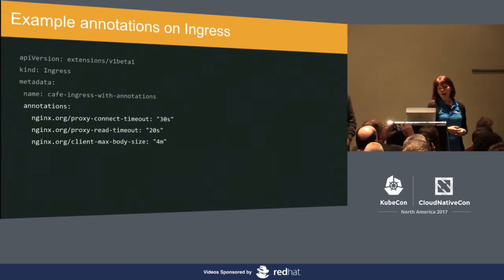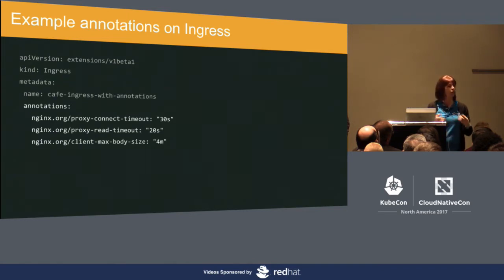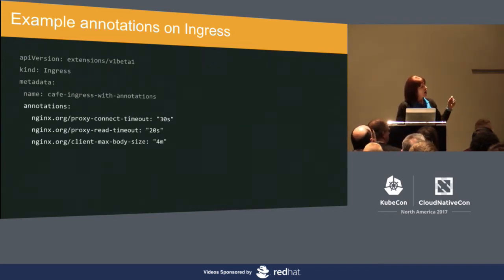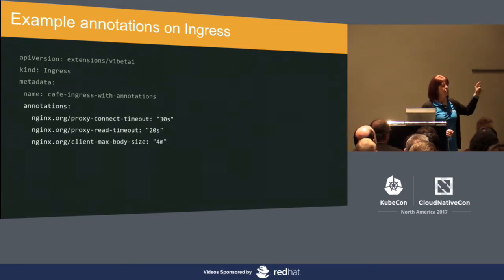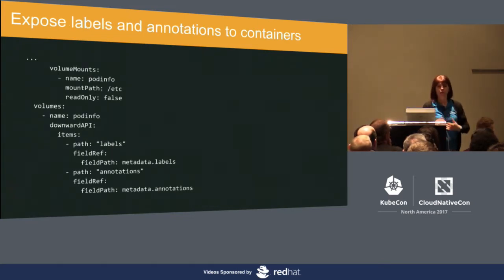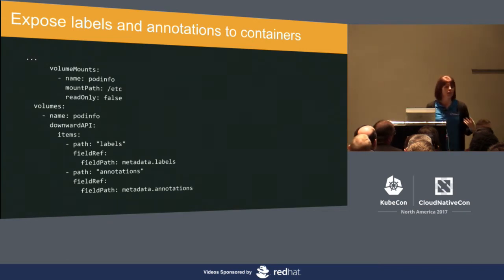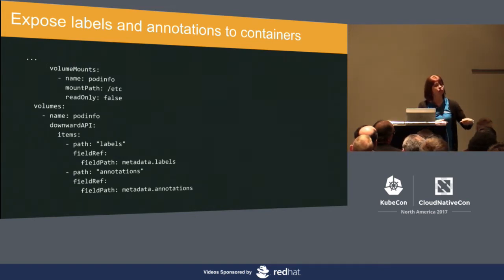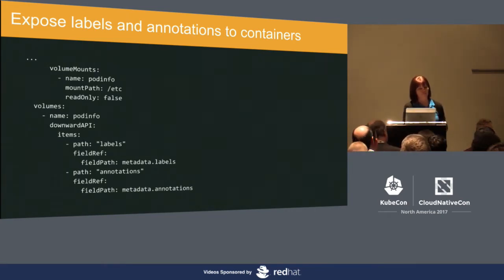Here's another example: an ingress with information about timeout configurations. That can be useful to you as a human being to see when something should time out. You might say — but how do you know this actually matches what the software knows, since this is annotation data and not part of the code itself? It turns out there's a really useful feature called the Downward API. The Downward API lets you make labels and annotations data accessible to the container itself. So in that NGINX example, it could be reading its configuration from the annotations — meaning the human-readable version and the software information are one and the same, which is a good thing.